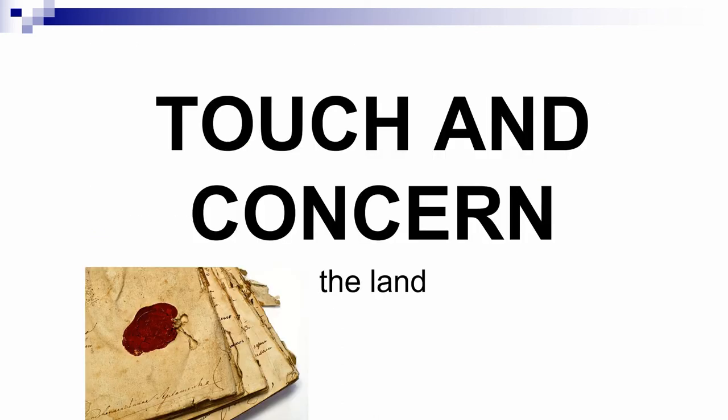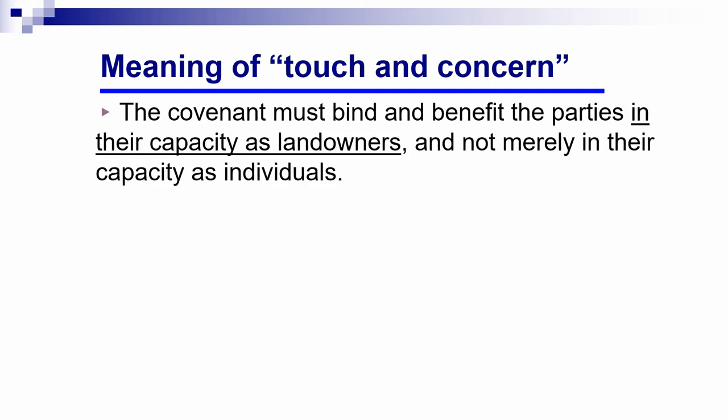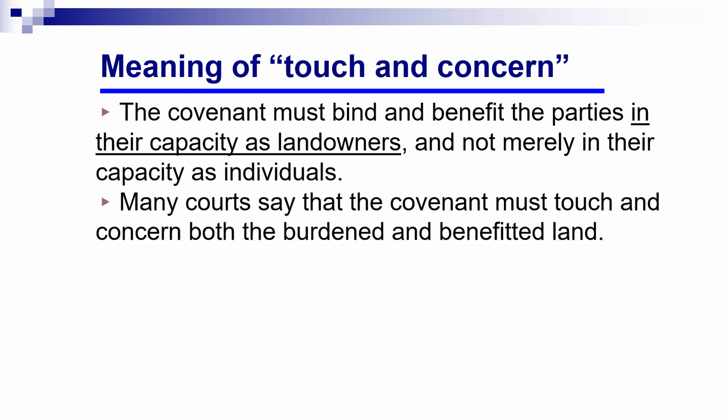The second requirement for a covenant to run with the land is that it must touch and concern the land. Touch and concern means the covenant has got to have something to do with the real estate. Obviously a parcel of real estate can't make a covenant — covenants are made by human beings — but the covenant must bind and benefit the parties in their capacity as landowners and not merely as individuals. Many courts say the covenant has to touch and concern both the benefited land and the burdened land.